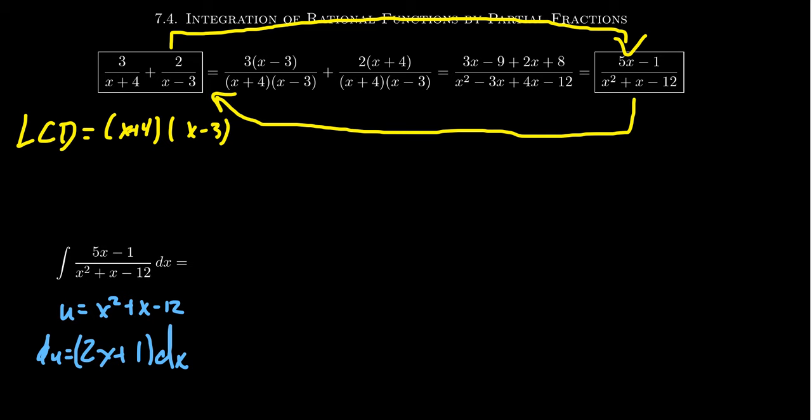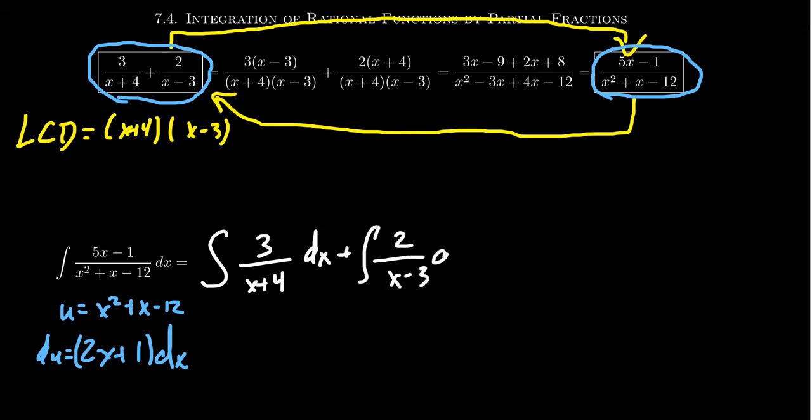The good news is, if we know this rational function equals two partial fractions, we can replace the big fraction with the smaller ones. This becomes the integral of 3/(x+4)dx plus the integral of 2/(x-3)dx. Taking out the constants: 3∫dx/(x+4) + 2∫dx/(x-3).